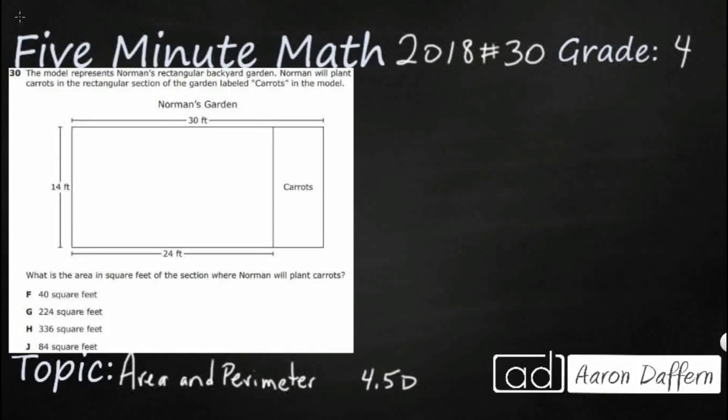Hello and welcome to 5-Minute Math. Today we are looking at the fourth grade concept of area and perimeter. This is standard 4.5D in the great state of Texas and we are using item number 30 of the 2018 released STAR test.